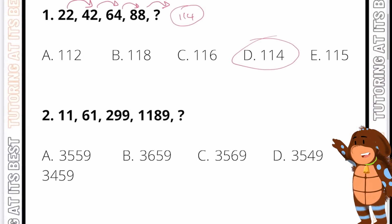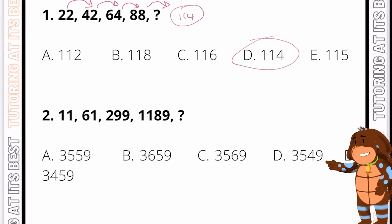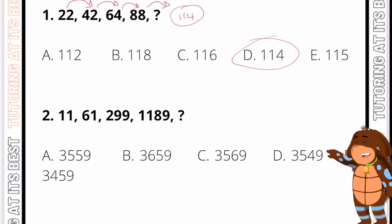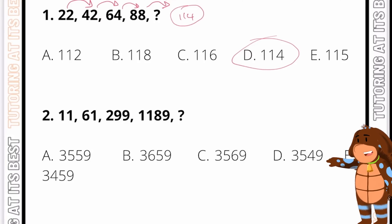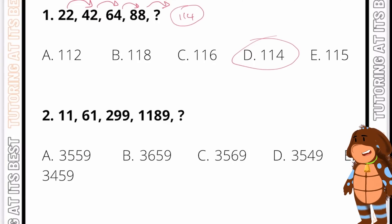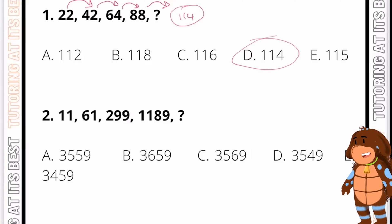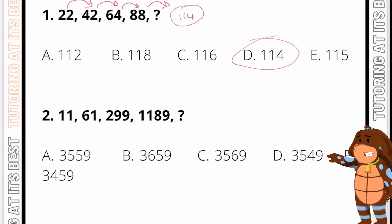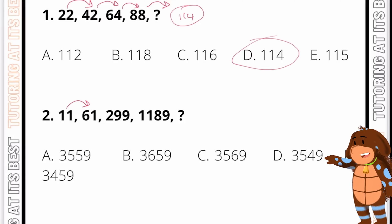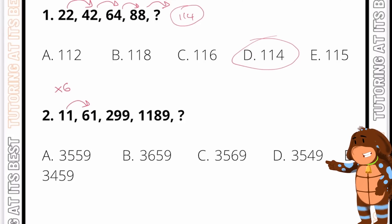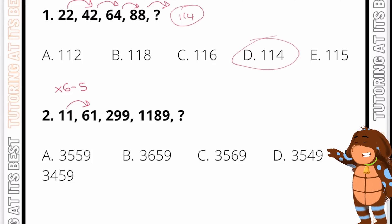Let's now move to question number two. We have 11, 61, 299, and 1189. This is quite interesting. We could find a number that multiplies 11 to get us close to 61. Let's multiply 11 by six — that gives us 66. And then if we subtract five, that gives us 61.